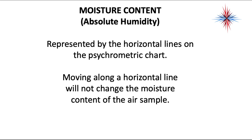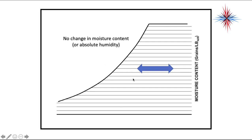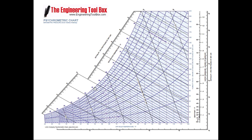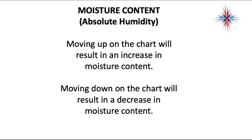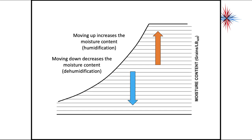Moisture content is also on the chart. It's represented by horizontal lines on the psychometric chart. Moving along a horizontal line will not change the moisture content of the air sample. The scale for moisture content is on the right side. If you go any place left to right along the line, you don't change it. Moving up on the chart will increase the moisture content — humidification — and moving down will decrease it — dehumidification.